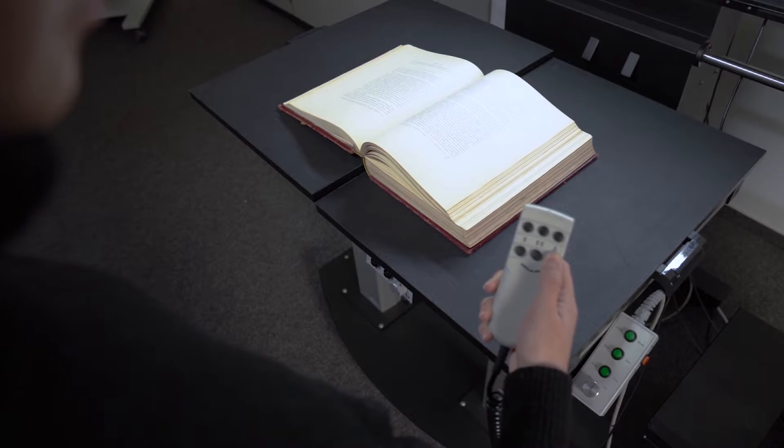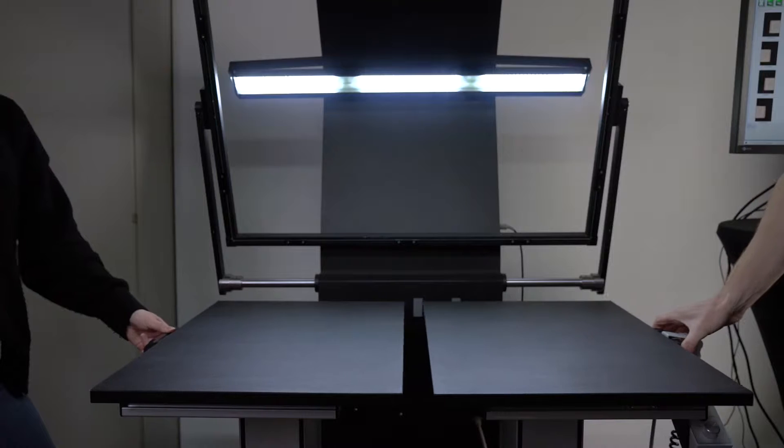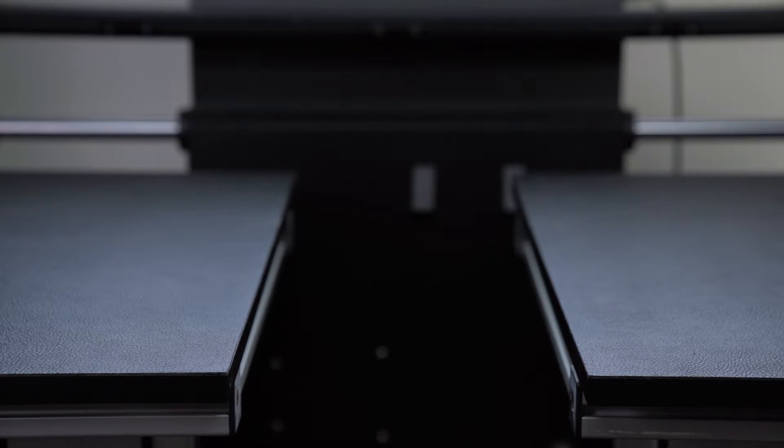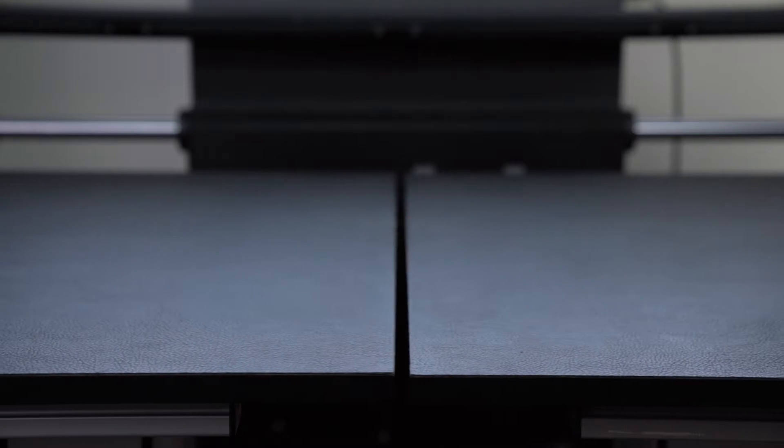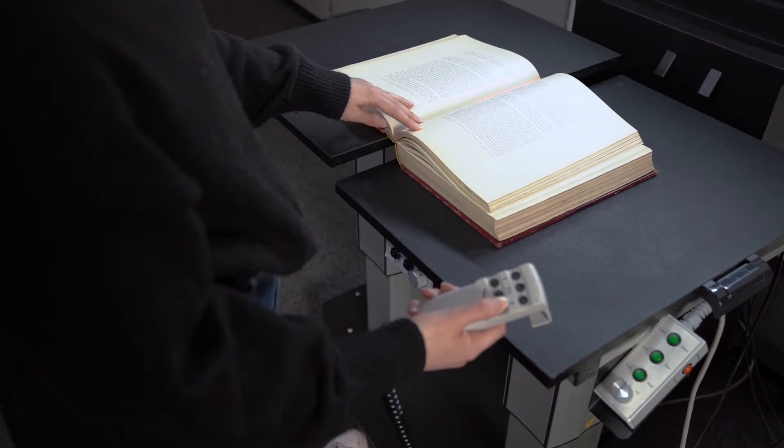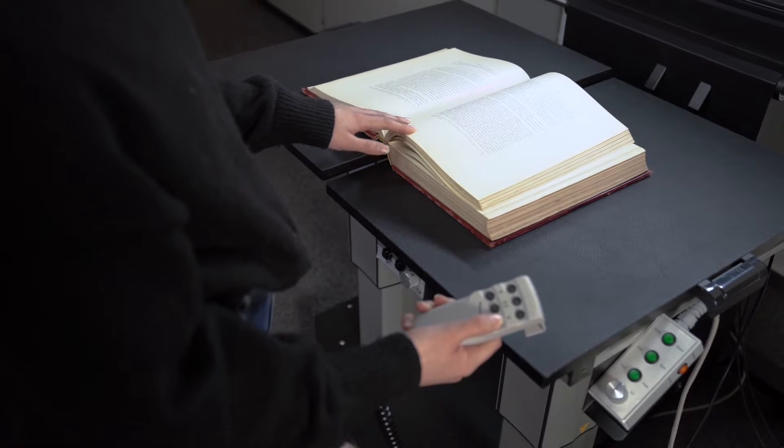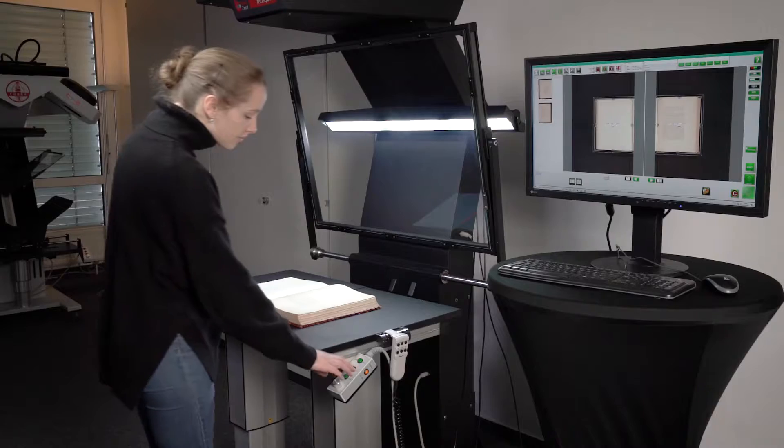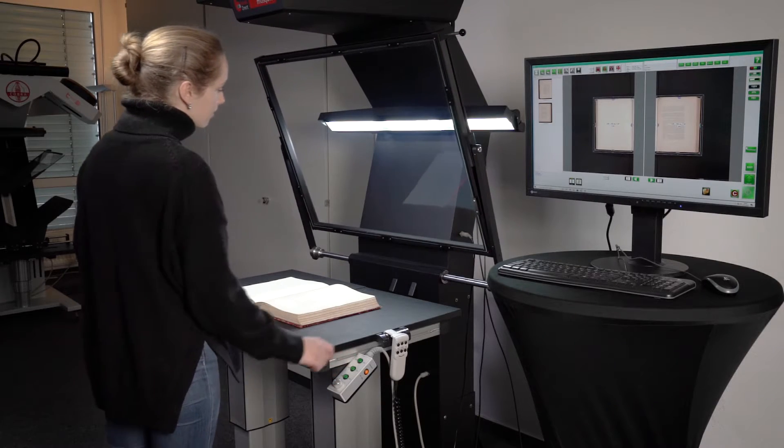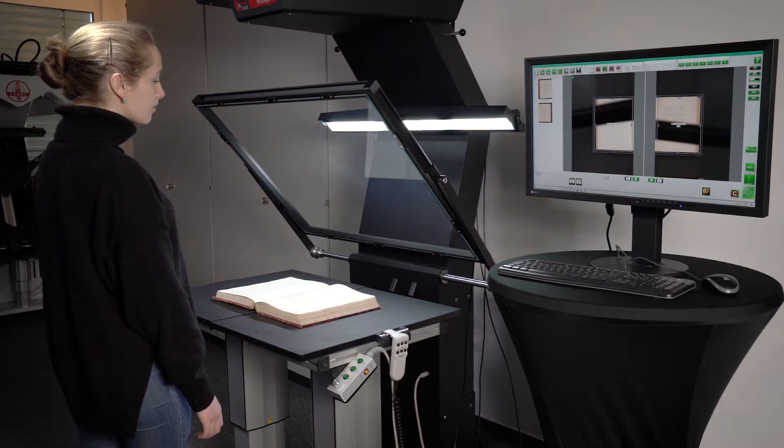The system's motorized book cradle is gentle on valuable originals. A spine exemption of 25 cm and height exemption of 20 cm relieve the book of unnecessary stress to the binding during the scanning process. The two sides of the cradle are independently controllable with the remote control and can carry up to 180 kg each.